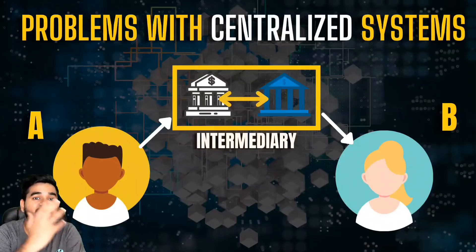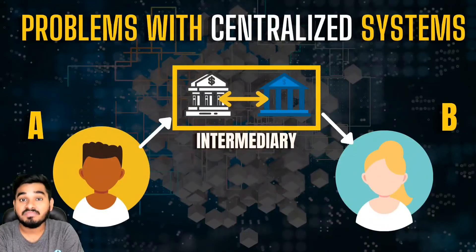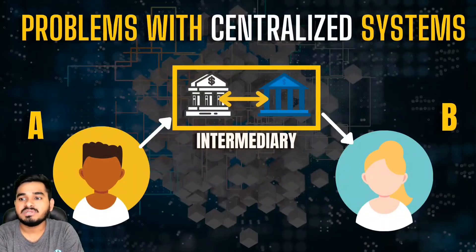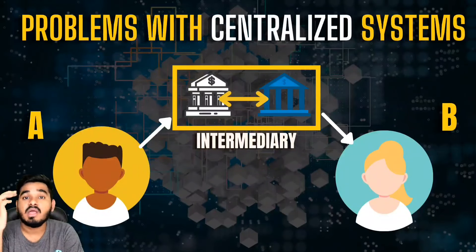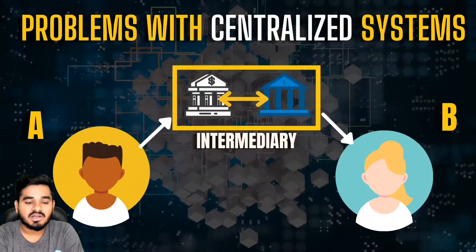If someone from the bank wants to change, store, or hack the data, it is possible. And if that happens, all your data will be at risk. Even if some unknown hacker tries to steal the data, it is still possible. This is a major vulnerability of centralized systems.